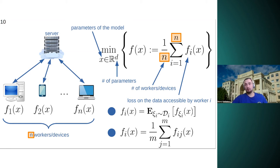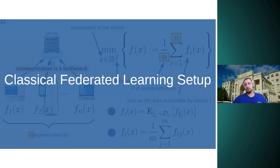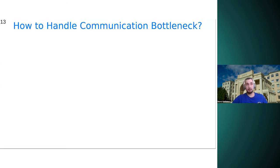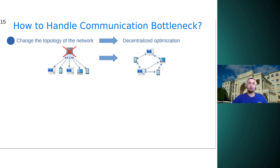So since the communication is bottleneck, one need to somehow handle this. And there are a number of approaches. For example, if it's possible, one can change the topology of the network and for example, remove the server and consider some decentralized optimization methods on some graph. Or alternatively, one can do more work on each worker in the hope of communicating less. For example, do more local steps of some gradient method or more sophisticated method.